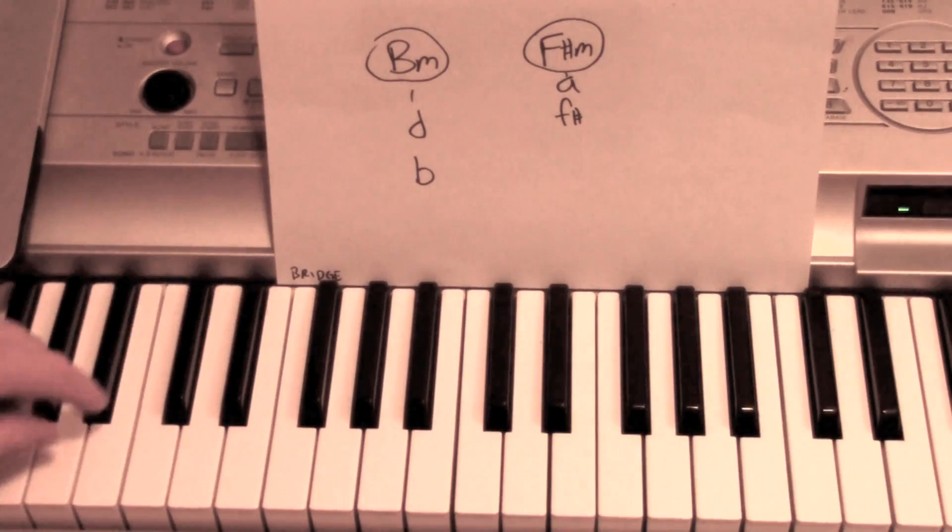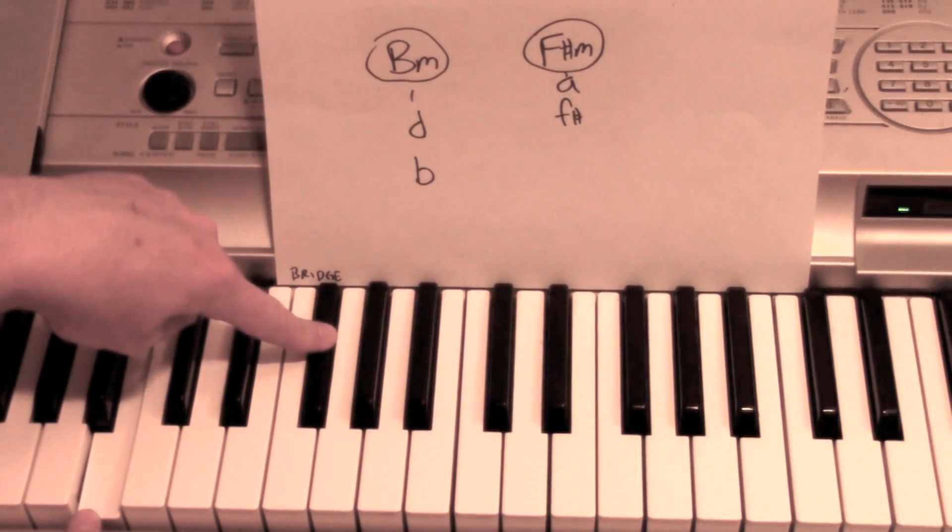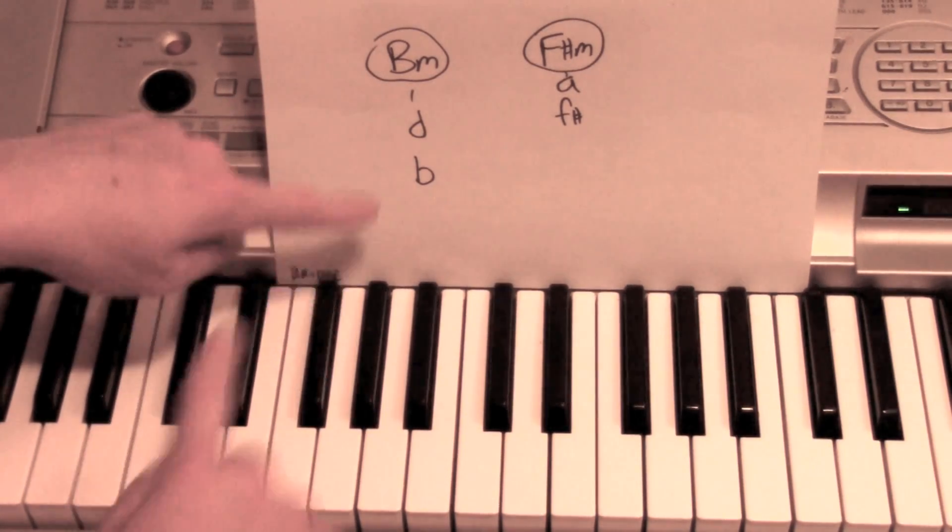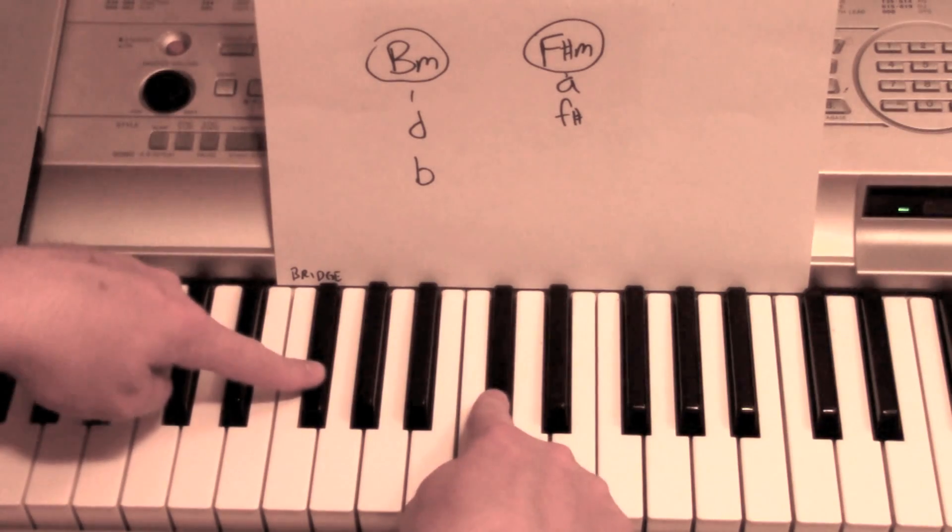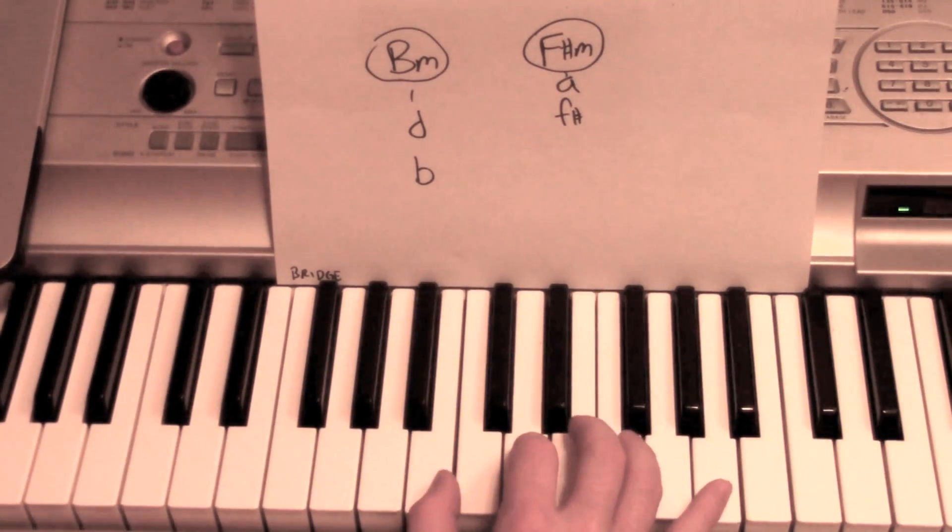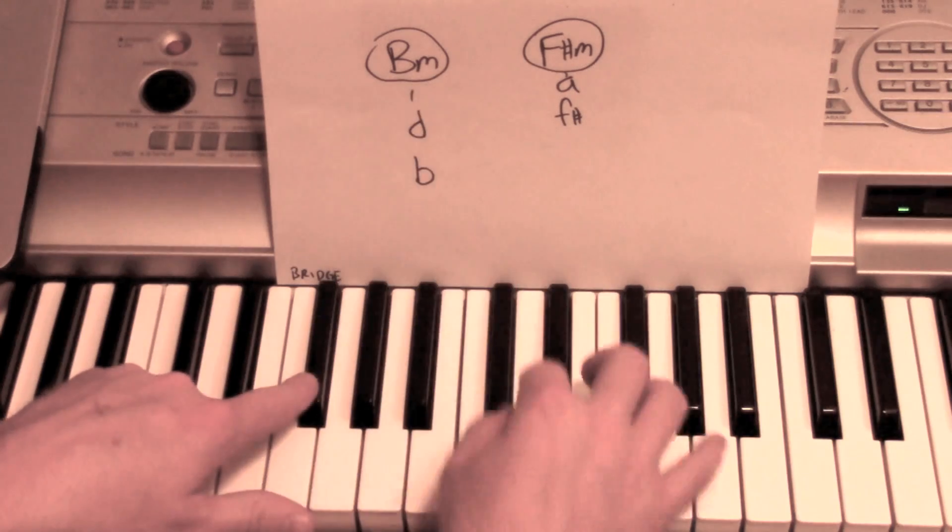It goes up to F sharp and A. Same chords in the left hand, going from the B minor chord to the F sharp minor using those two in the left hand, and then it just kind of hangs on the chords for a while. So it starts on the B minor.